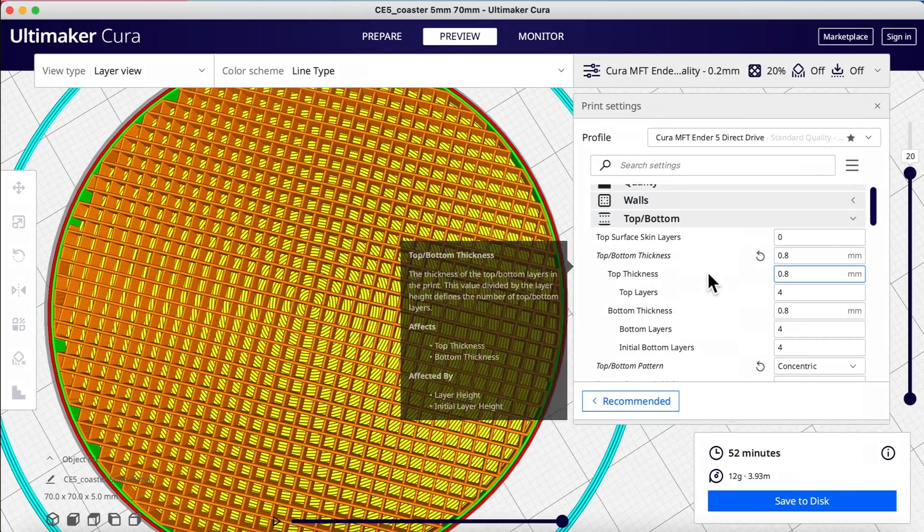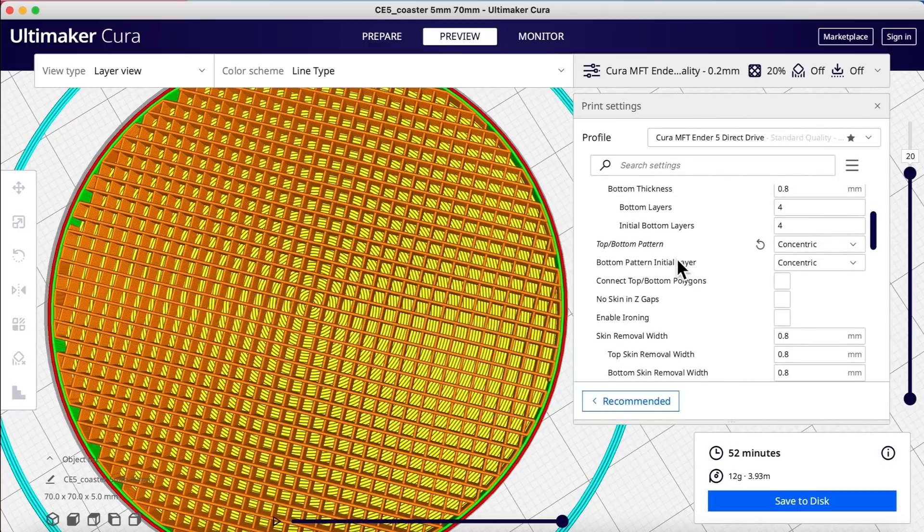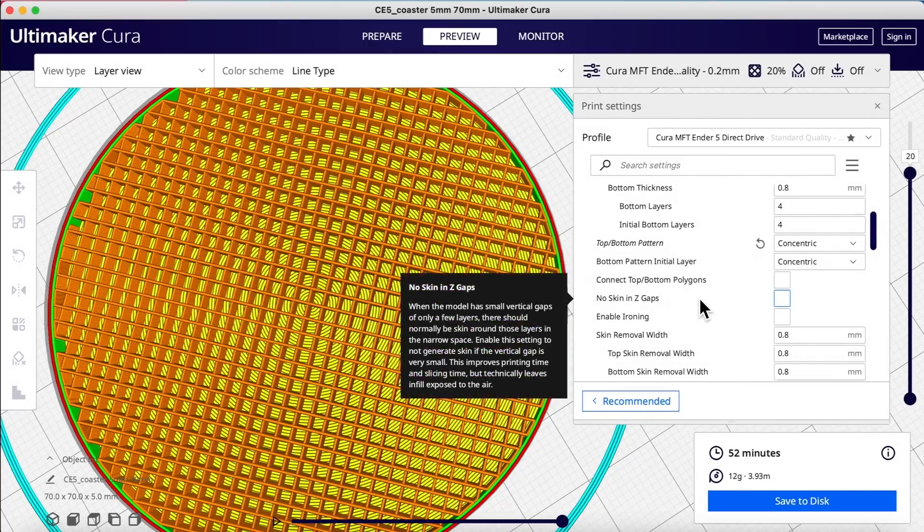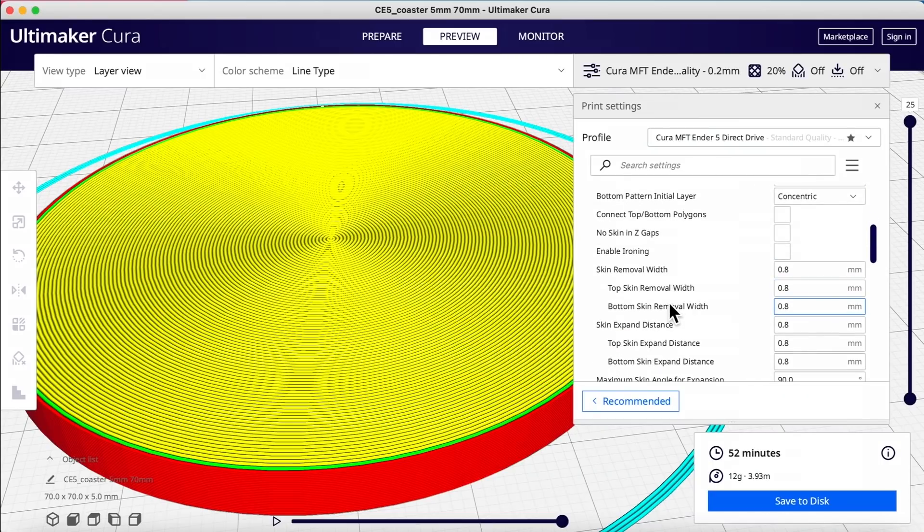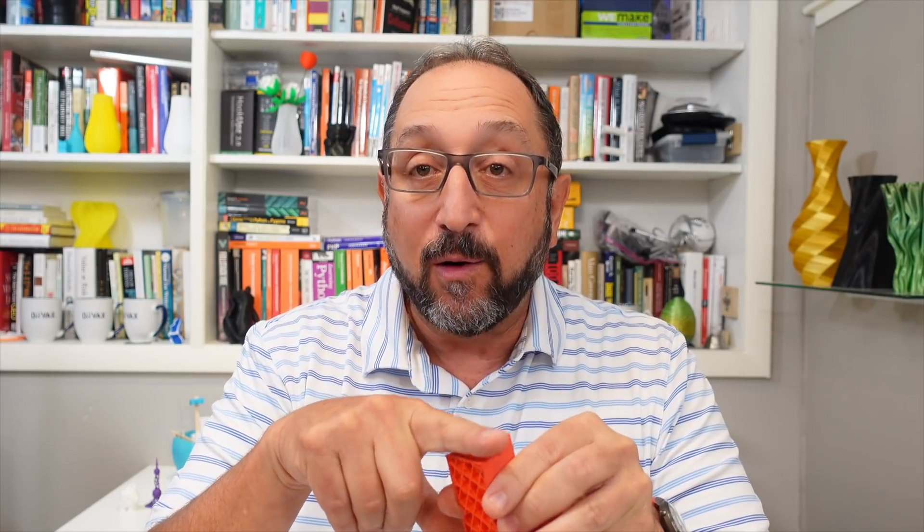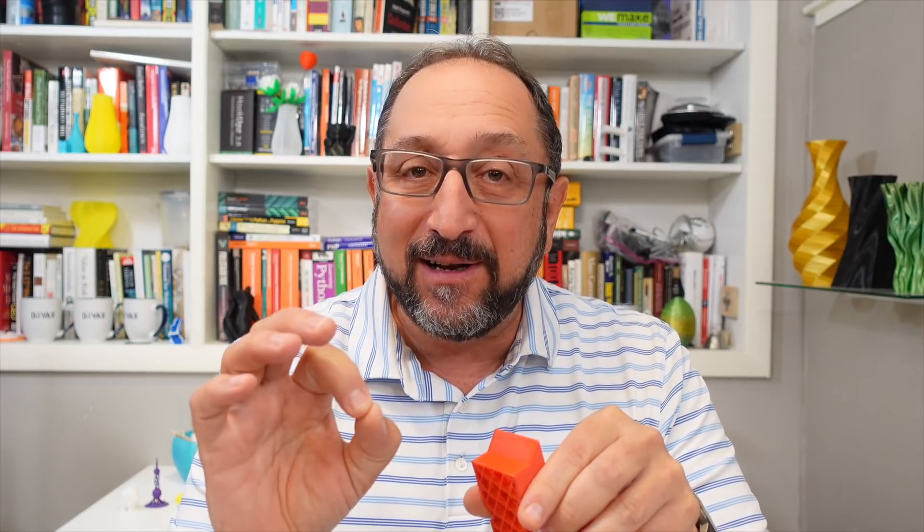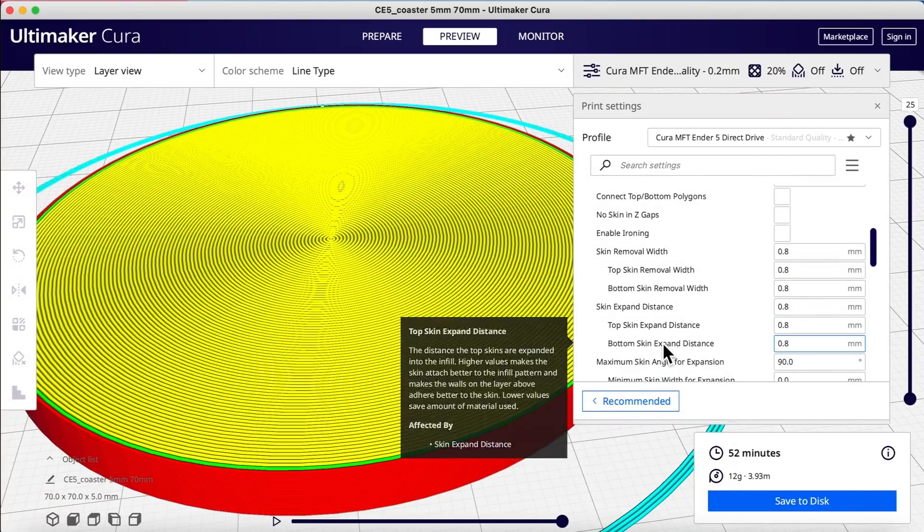Okay. Now let's go back to top and bottom and look at some of the other parameters. We already defined what skin was, top and bottom, thickness we've defined. We can define the pattern. We looked at that. Now, no skin in Z gaps. This is called a Z gap. Ironing is a capability in Cura. It's also available in other slicers, where for the very top layer of your model, it says, go over that layer with a hot nozzle that's extruding very little or no filament. So it's sort of like ironing a sheet. You're ironing the top of your model. That can be very effective. It's slow, but it can be very effective in smoothing the top of a model. So these various skin parameters that come next all define that very top layer.